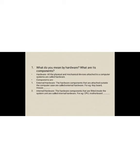First question: what do you mean by hardware and what are its components? All the physical and mechanical devices attached to a computer system are called hardware. The components are: external hardware — hardware components attached outside the computer case, for example keyboard and mouse — and internal hardware — components fitted inside the system unit, for example CPU and motherboard.